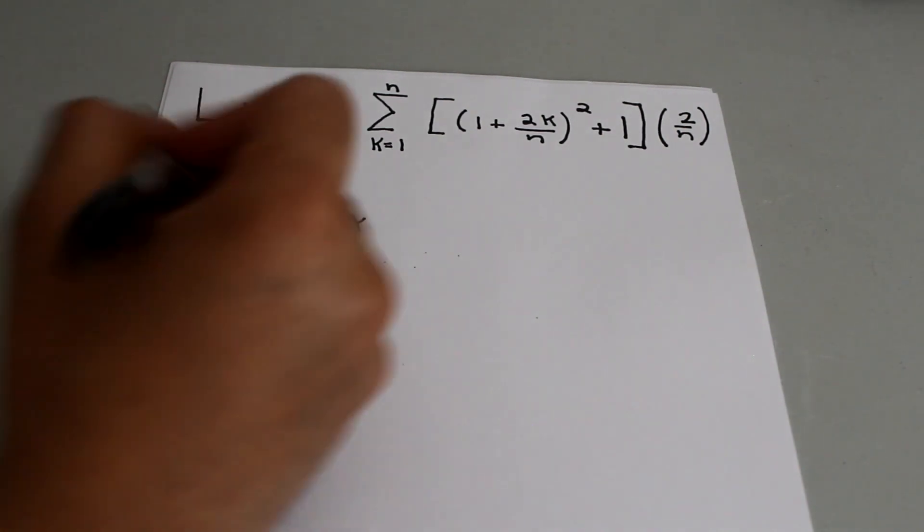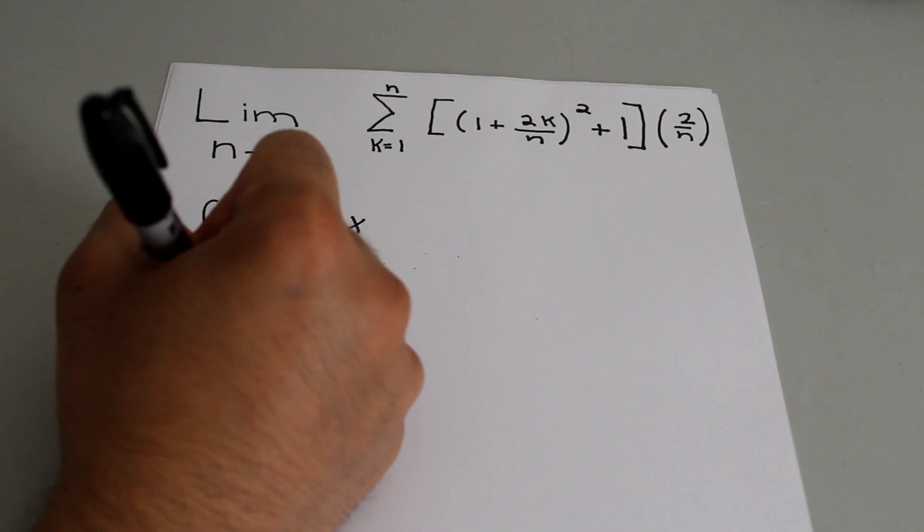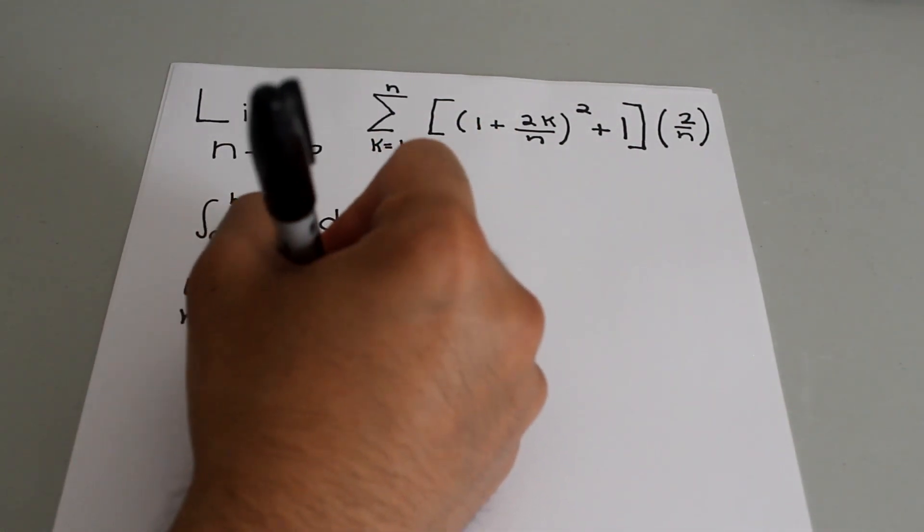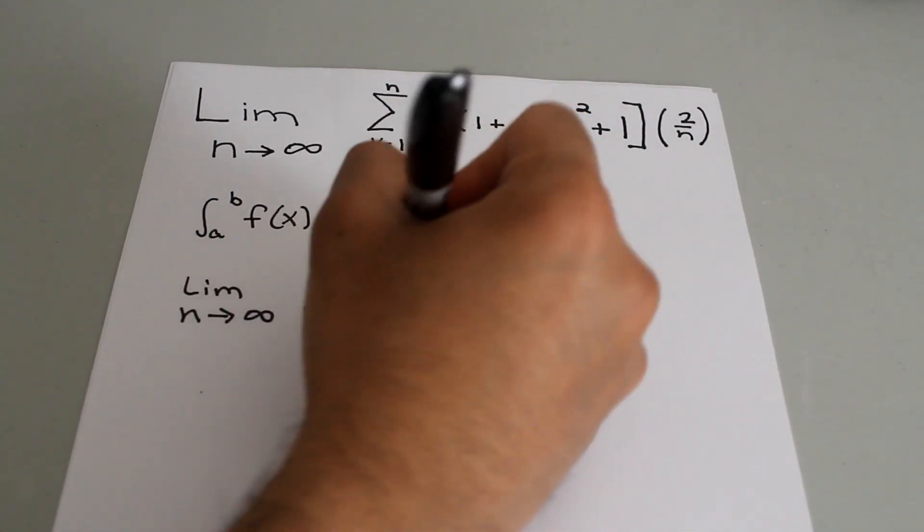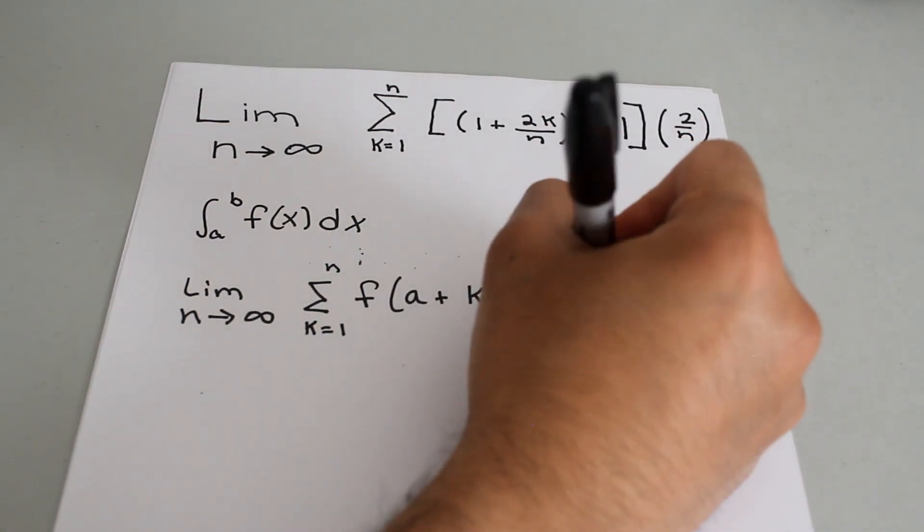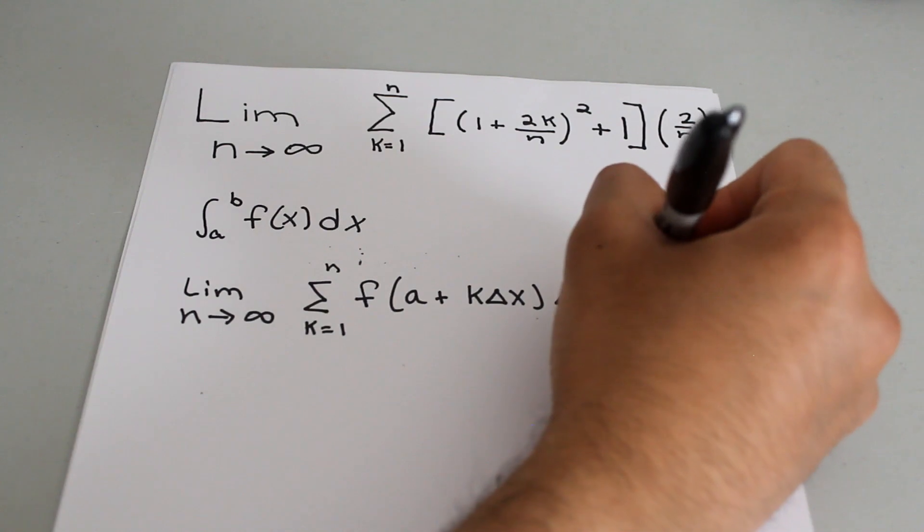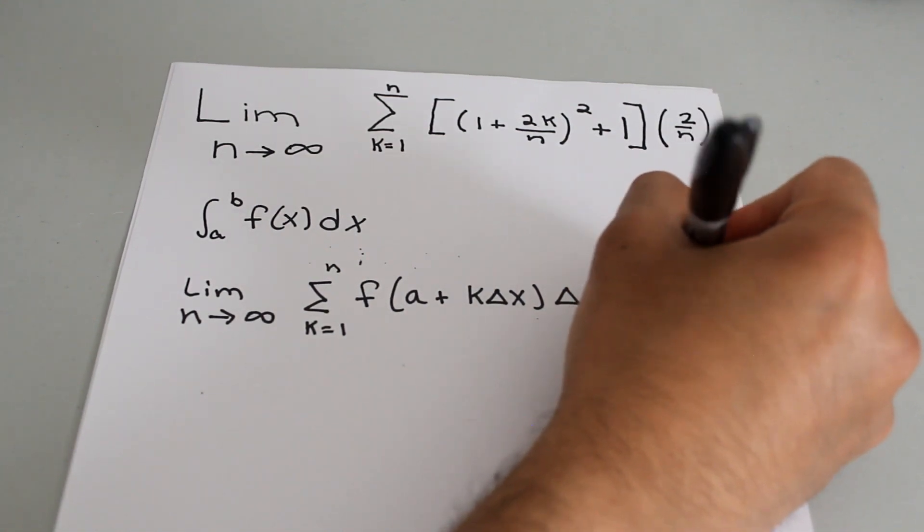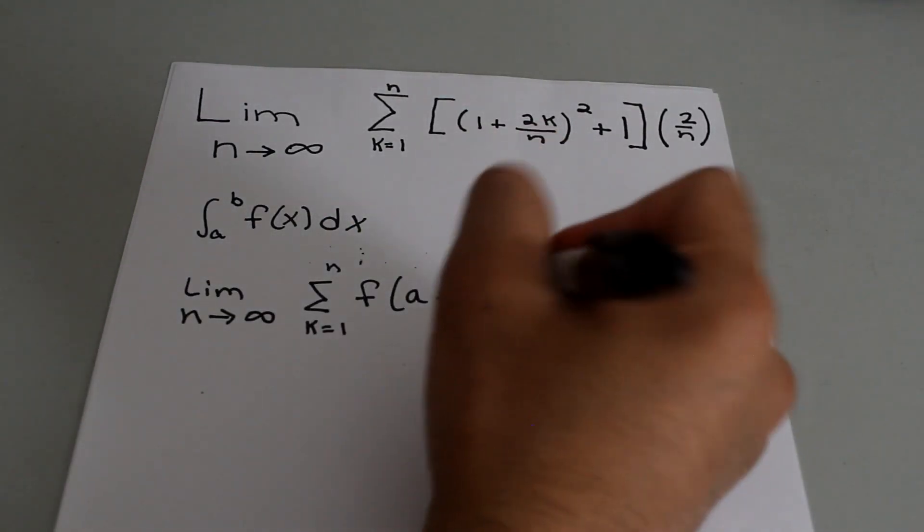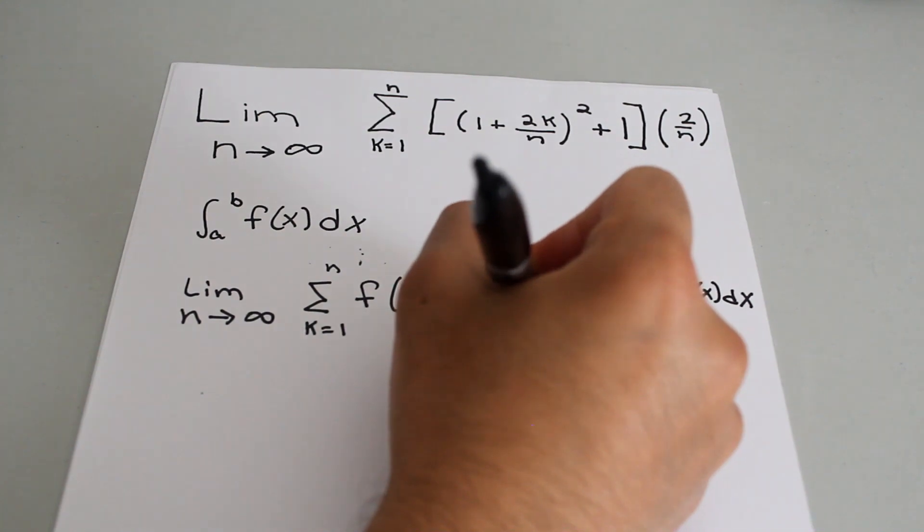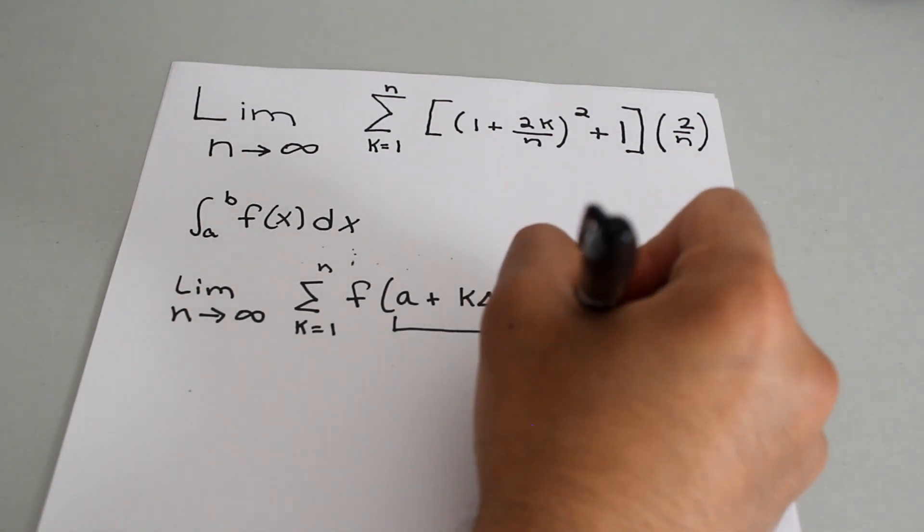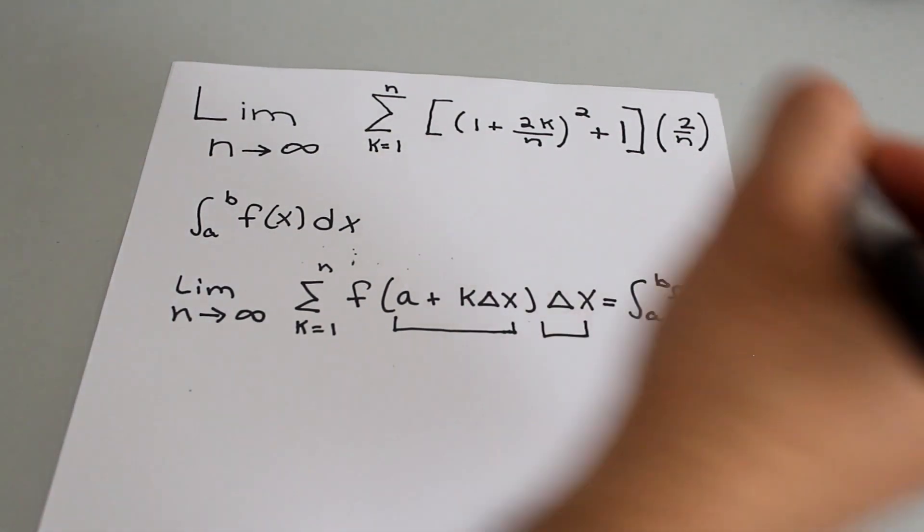Well in general, limit as n approaches infinity of a sum as k goes from 1 to n of f of a plus k delta x times delta x equals integral from a to b of f of x dx. Notice that this entire quantity a plus k delta x is replaced with the x and then the delta x is the equivalent of dx.